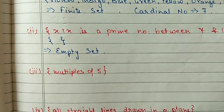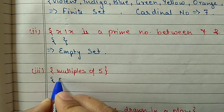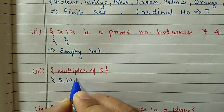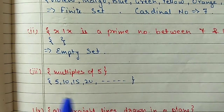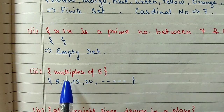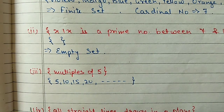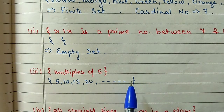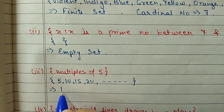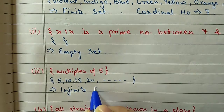Part (iii): multiples of 5. The multiples of 5 are 5, 10, 15, 20 and they go up to infinity because no limit is mentioned. It is not written 'first 5 multiples' or 'first 10 multiples', so we go up to infinity. Up to infinity means this set is an infinite set, and for an infinite set we do not write a cardinal number.